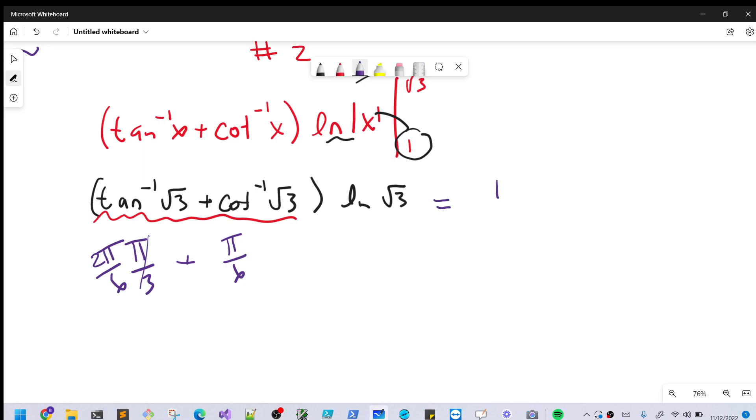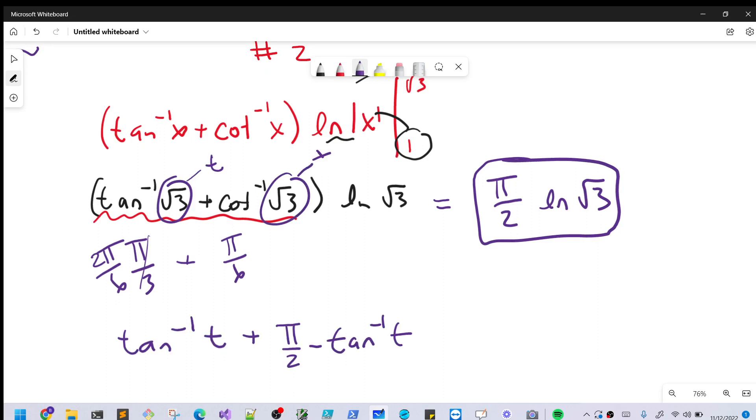So for our answer, we're going to have pi over two ln square root of three. And one thing to notice here, we can write it this way using complementary angles. And then the tan inverse, the whole angle cancels out, and we get our pi over two that way. So they didn't really need to give us that easy angle, but they did, and so it works out nice. So that's our solution, MIT Integration B 2022, problem number two.